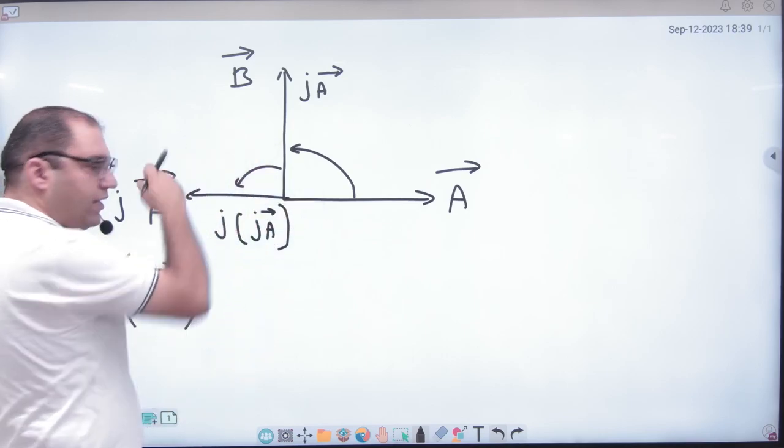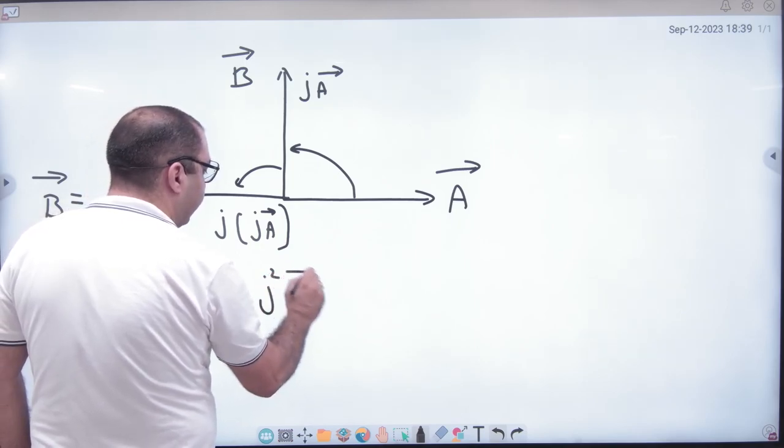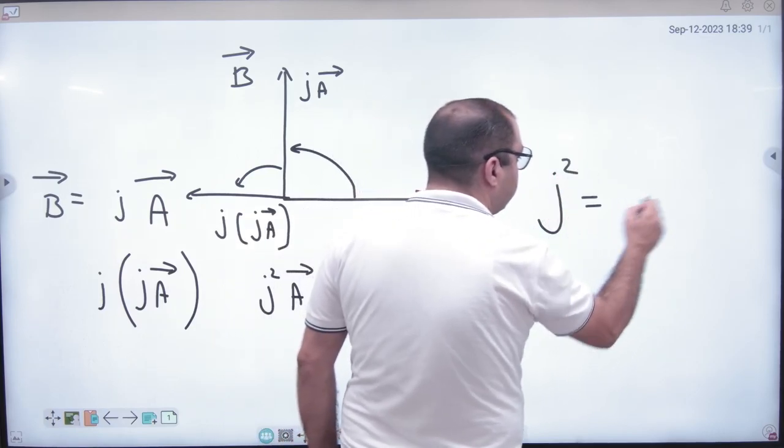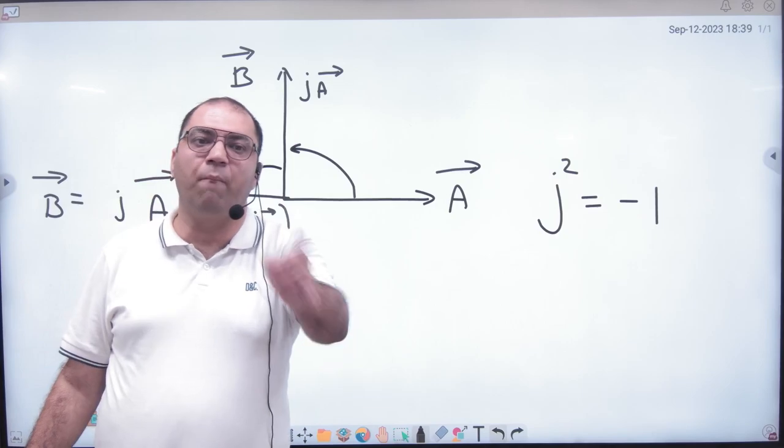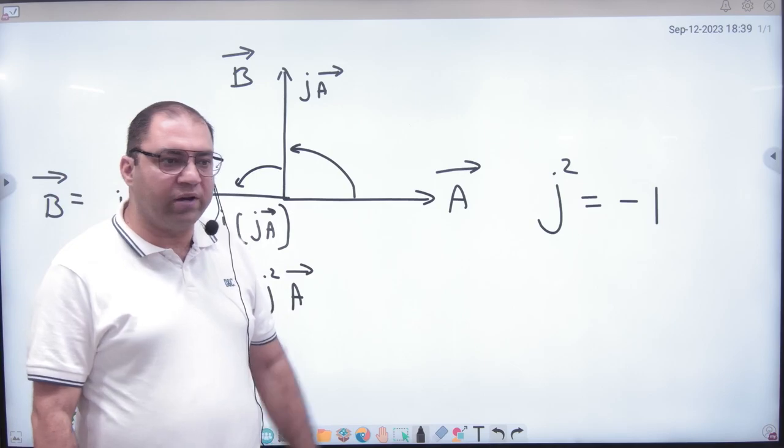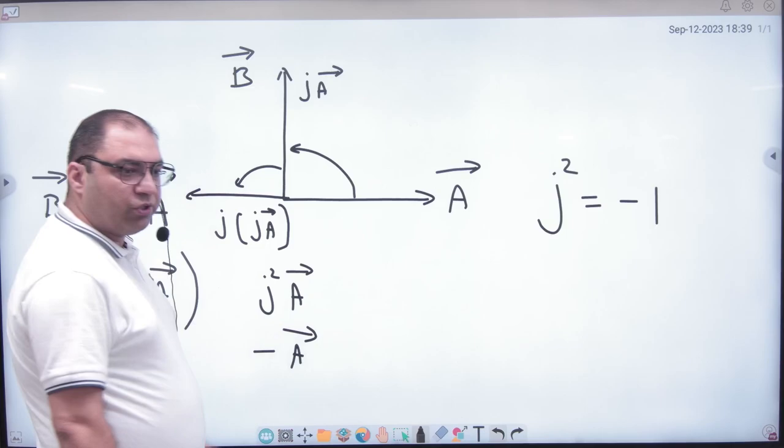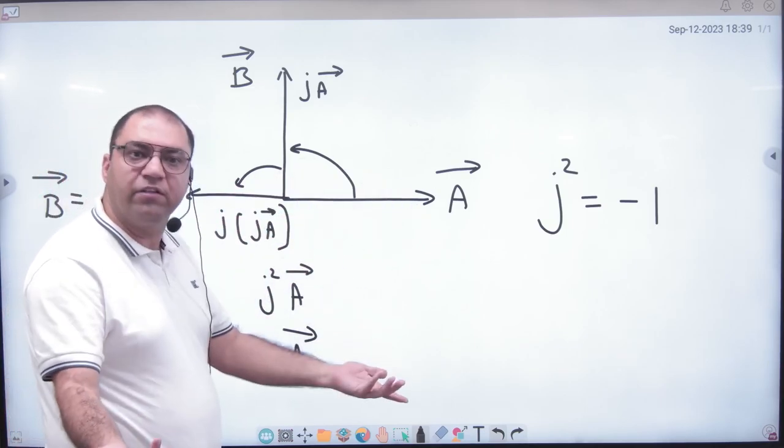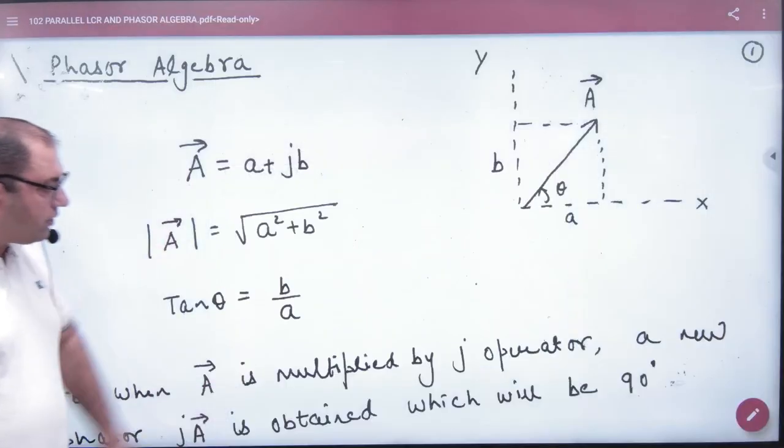So this means J squared A vector. In this vector or phasor algebra, J squared has a value of minus 1, just like in mathematics, in complex numbers with iota. J is like the brother of iota. J squared equals minus 1. So if you put J squared equals minus 1, you get minus A vector. Minus A vector means the opposite of A vector. So this is an algebra which works with the J operator.